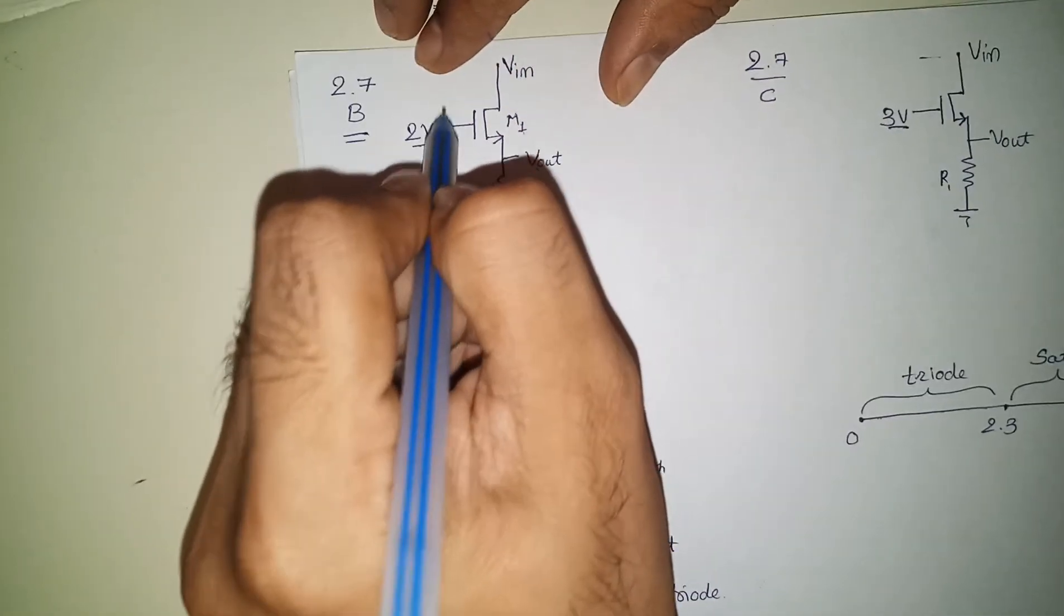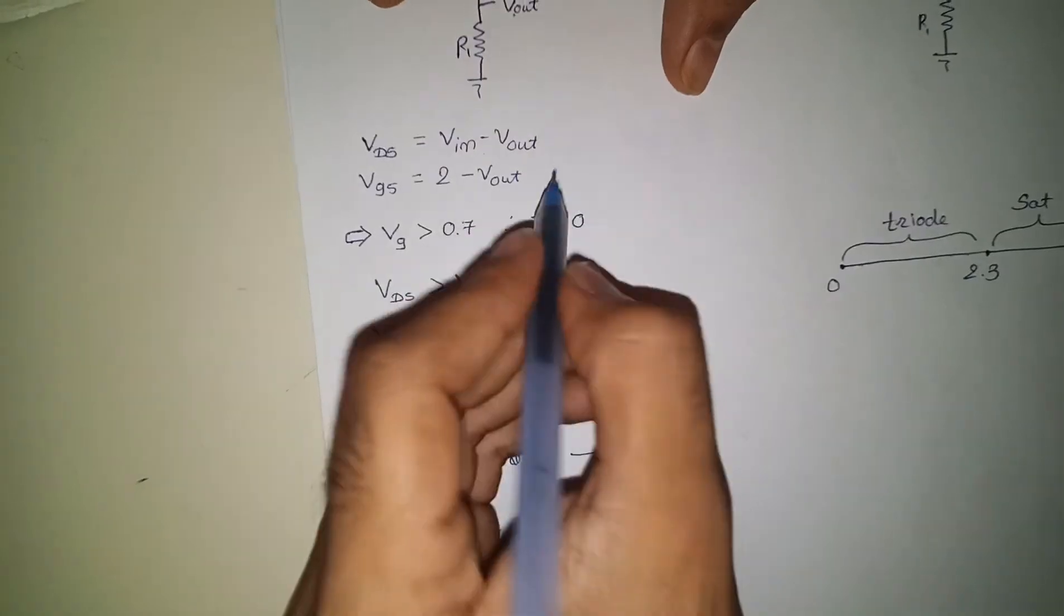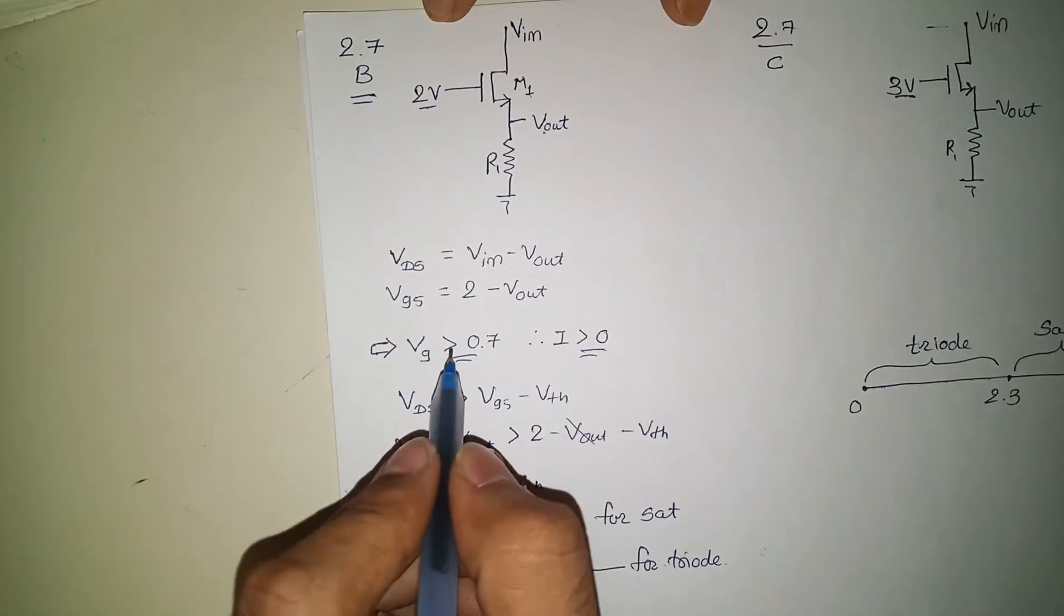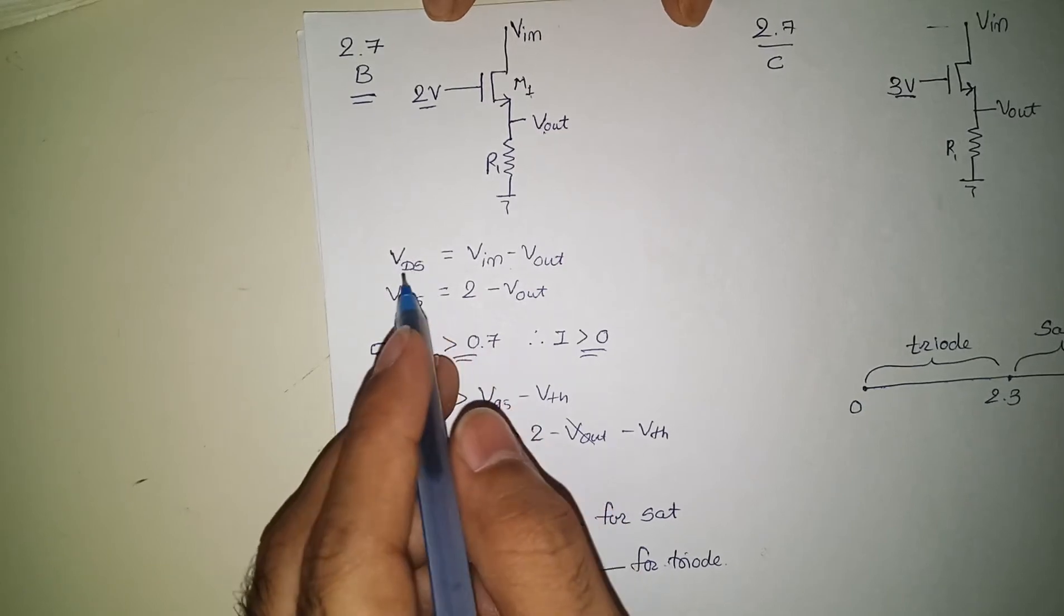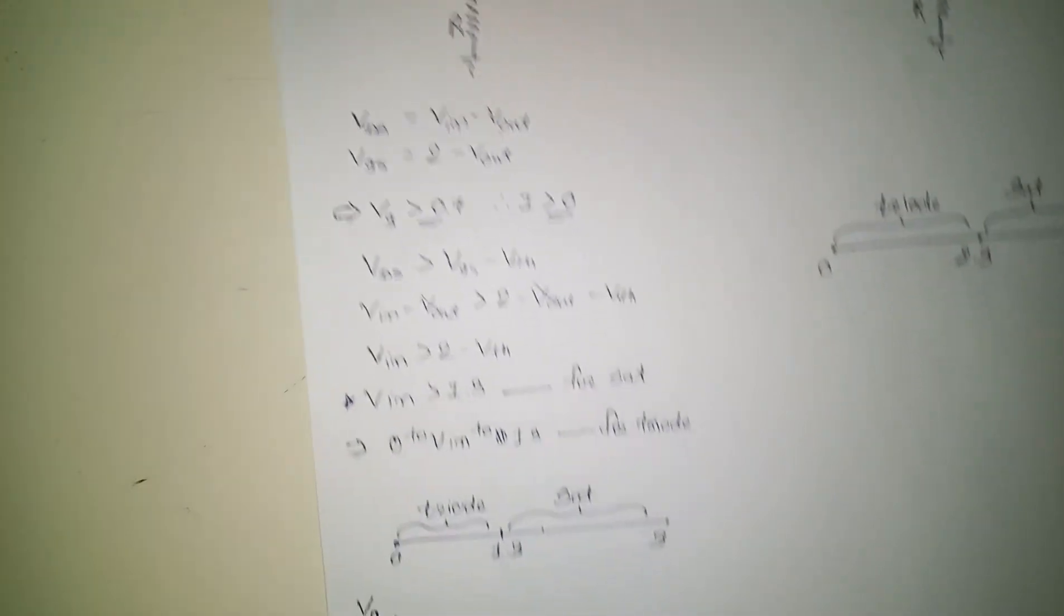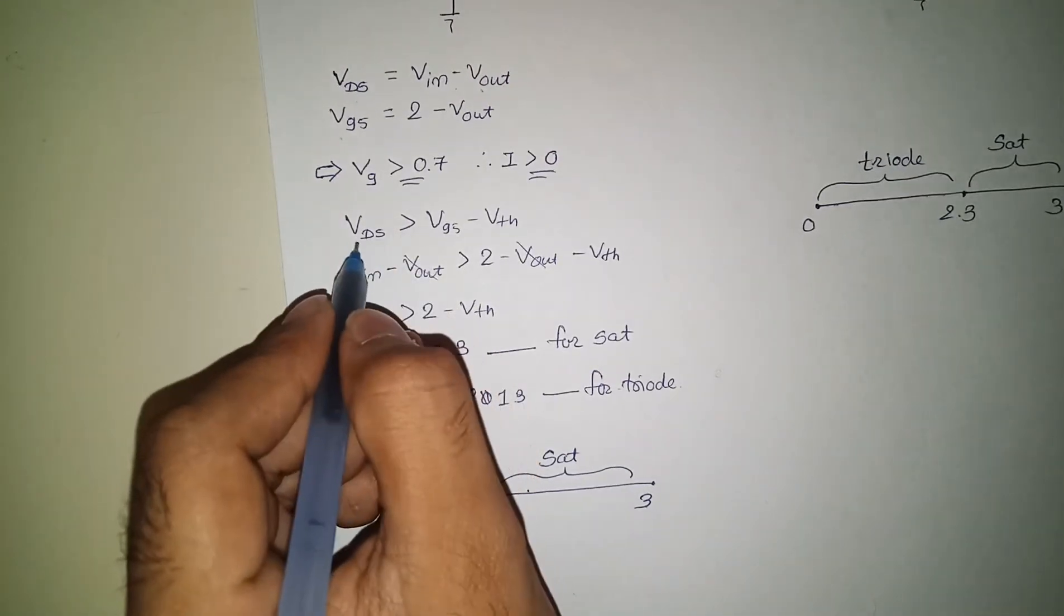Some current will flow. For Vg greater than 0.7, here Vds is Vin minus Vout. Vgs is 2 minus Vout. So the saturation condition is Vds will be greater than Vgs minus Vth.